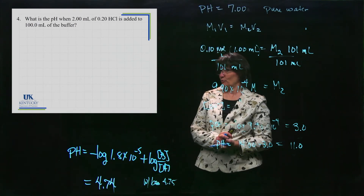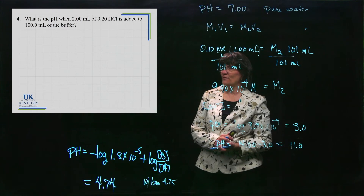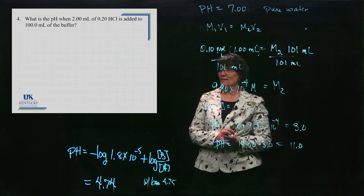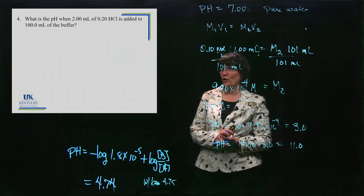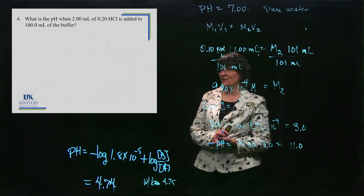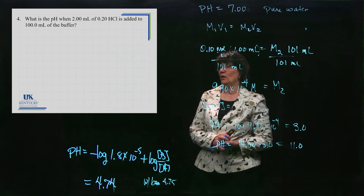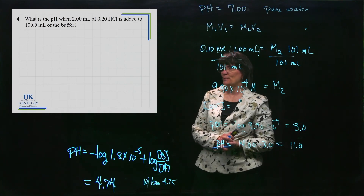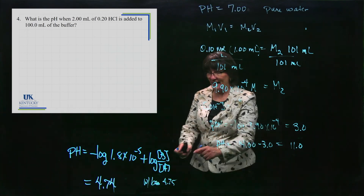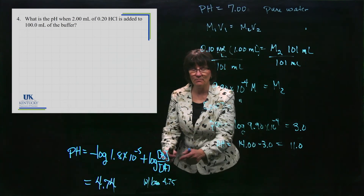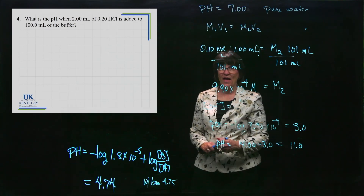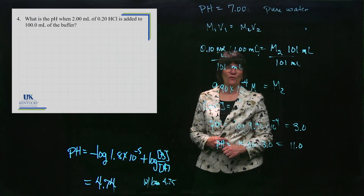Next, we're going to see what happens when we add twice as much — 0.2 molar HCl — to the same buffer, to see if that changes the pH.